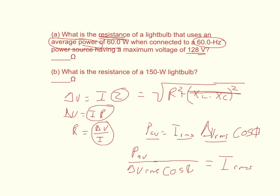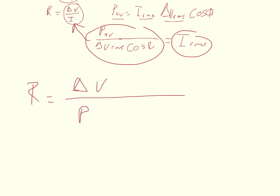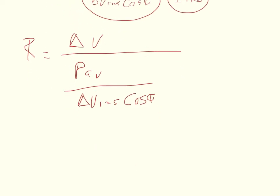At this point there's a lot of ways that we could go. I think the best way is that we have an equation to solve for the current, and if we just substitute this into the current in our first equation, then we should be all right. We have to say that this is I rms and delta V rms. So R equals delta V divided by the average power divided by delta V rms cosine phi.